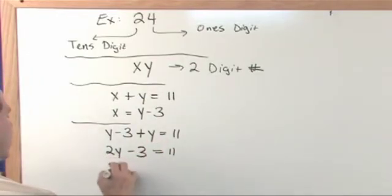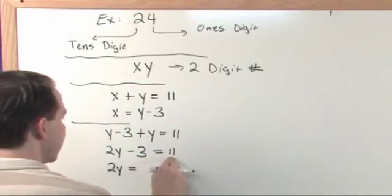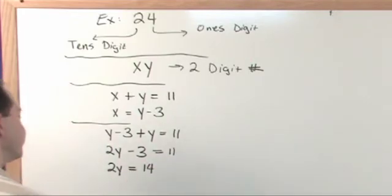Now let's move the three over. Two y is equal to, we'll just add three. Three plus three is zero. So on the other side, eleven plus three gives you fourteen. We just added three to both sides.